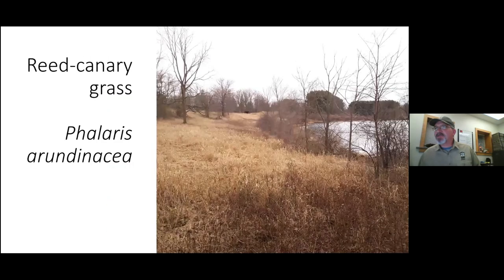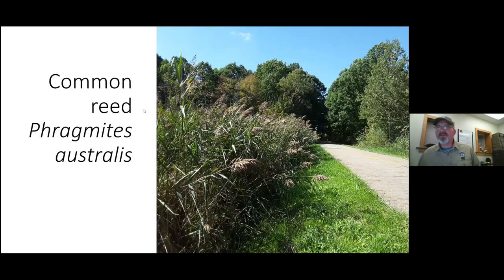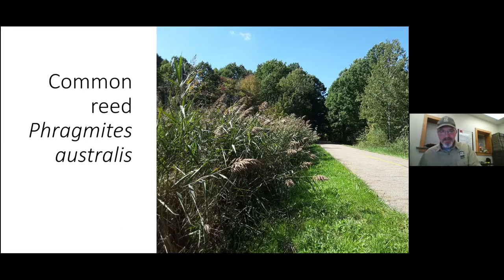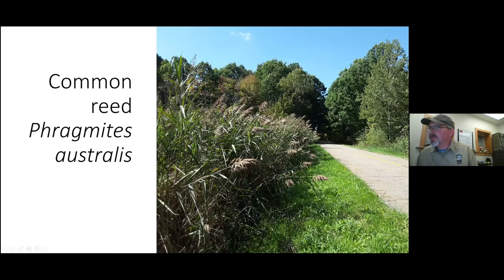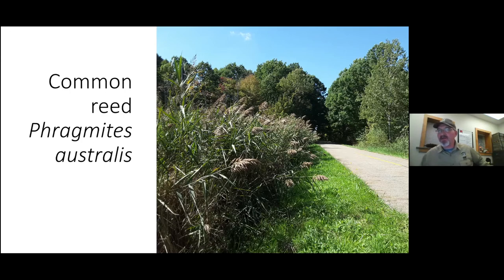Our last herbaceous weed is one everybody has probably seen alongside the roads: Phragmites, the common reed. It's a really tall, dense grass, mostly invading our wetlands and spreading in moist ditches and small depressions. Phragmites is a tall perennial grass — some literature says five to ten feet tall, but we've certainly seen it up around fifteen feet. It's from Eurasia, came over around the 1800s in ship ballast. The flower heads look fluffy later in the season, but the plants typically bloom around July through early August.